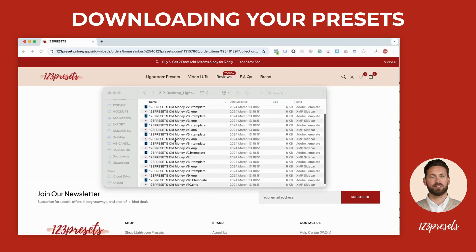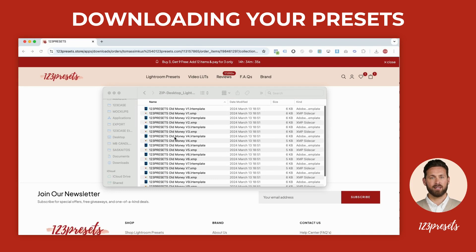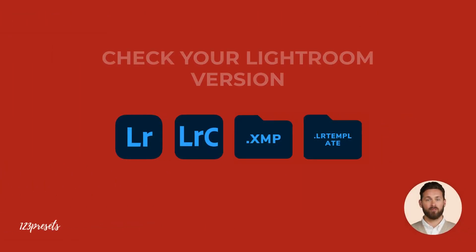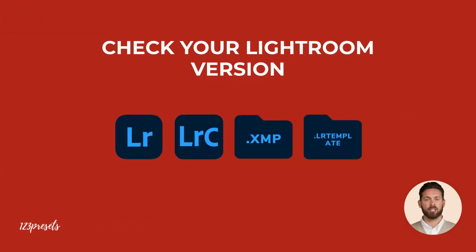Once extracted, you should see a folder containing .lrtemplate and .xmp files — these are your presets. Before anything else, let's figure out which Lightroom version you're using, as each version looks a little different. Newer ones use the .xmp format, while the older ones stick to .lrtemplate files. No need to stress though, I've got you covered.